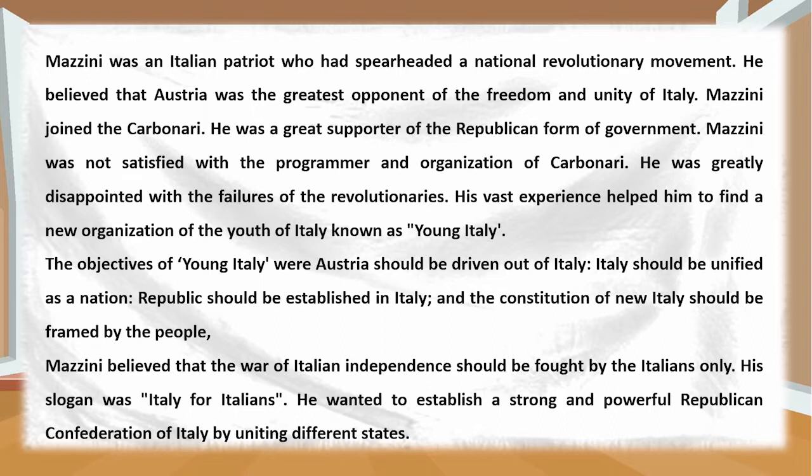His vast experience helped him to found a new organization of the youth of Italy known as Young Italy. The objectives of Young Italy were: Austria should be driven out of Italy; Italy should be unified as a nation; a republic should be established in Italy; and the constitution of new Italy should be framed by the people. Mazzini believed that the war of new Italian independence should be fought by the Italians only. His slogan was 'Italy for Italians.' He wanted to establish a strong and powerful republican confederation of Italy by uniting different states.